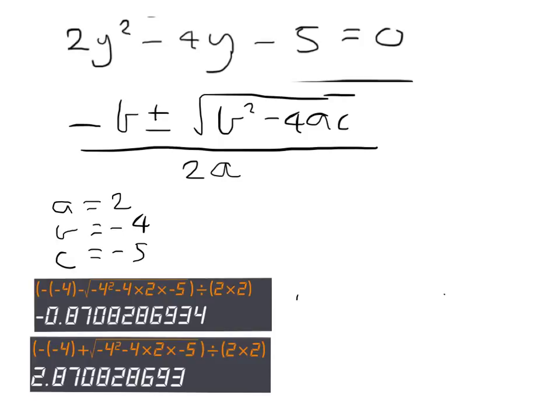So for y, in the first case, we get y to two decimal places is minus 0.88. And in the second one, I'll get the solution 2.88.